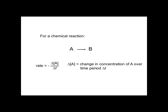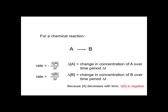For a chemical reaction of A being converted to B, the rate is equal to the negative of the change in concentration of A over the time period delta T, or the rate can be measured as the change in the concentration of B over delta T. Notice that the disappearance of A is negative, and the appearance of B is positive.